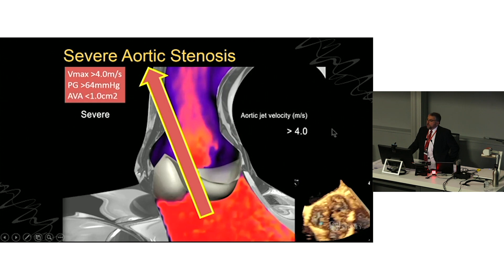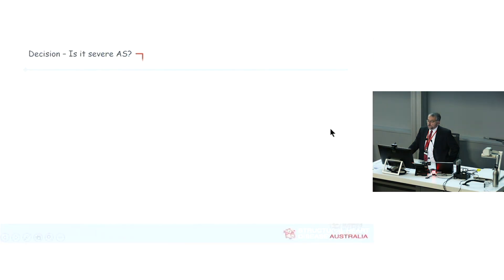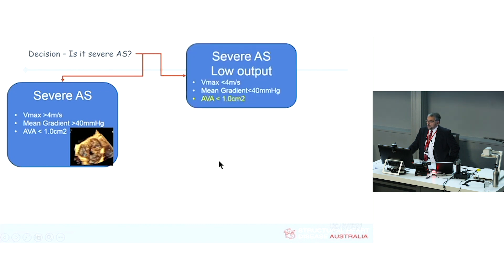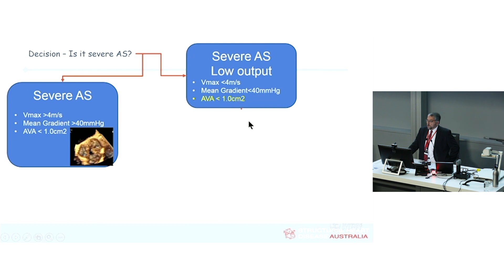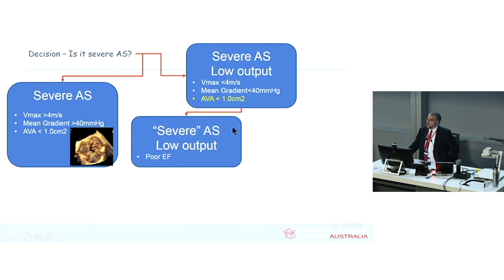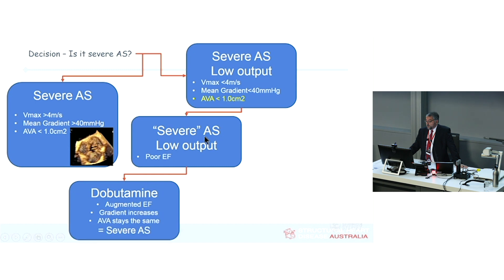It's all good when it's concordant. But what happens when it's not? It's easy when Vmax is high, the gradient is big, and the valve area is small. But what about when the Vmax is not above 4 m/s, the mean gradient is not above 40, yet the valve area appears below 1 cm²? Sometimes that really is true — because you've got poor cardiac output. Gradient is proportional to stroke volume. You can have truly severe AS with a sick heart that's not generating enough cardiac output.